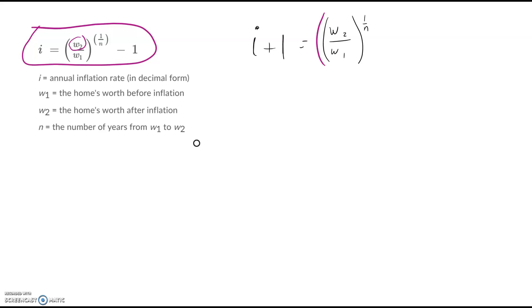I'm going to raise both sides to the Nth power. And then that's going to give me, it's going to get rid of this because one over N times N is one. So these would cancel out or the N divided by N would cancel out, right? So that leaves me with the following equation. I plus one to the N equals W2 over W1. And if I'm solving this for W2, then I could just multiply both sides by this. And I got my answer.